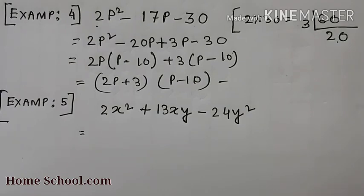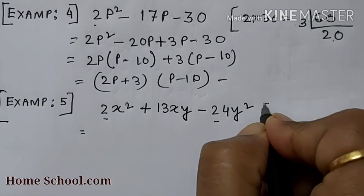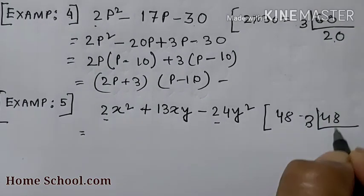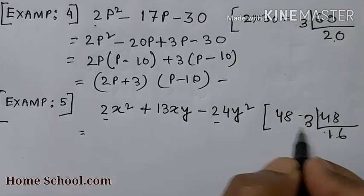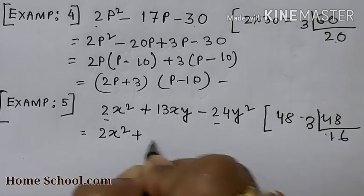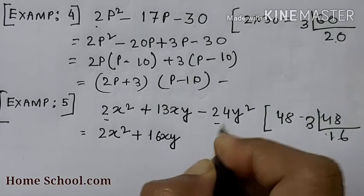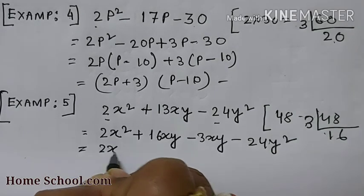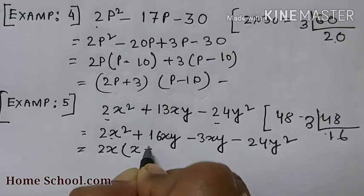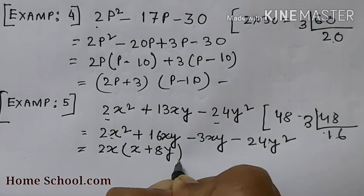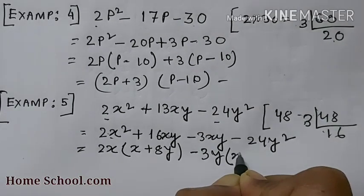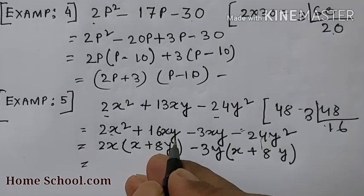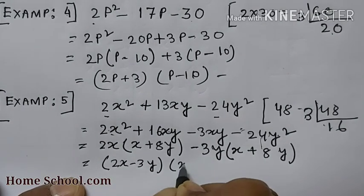Example 5: 2x² + 13xy − 24y². Integers 1 and 3 multiplied: 24 × 2 = 48. LCM of 48: 16 × 3 = 48, and 16 − 3 = 13. We write 2x² + 16xy − 3xy − 24y². Taking 2x common gives 2x(x + 8y). Taking −3y common gives −3y(x + 8y). So the answer is (2x − 3y)(x + 8y).